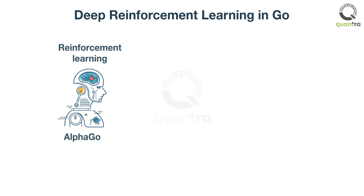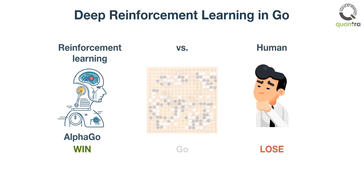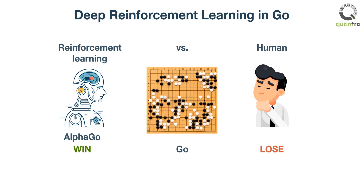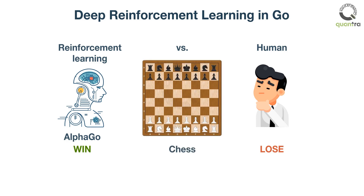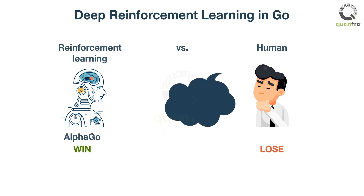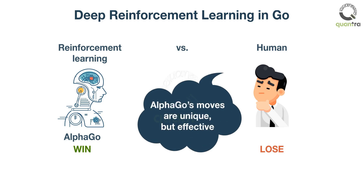AlphaGo, which uses a deep reinforcement learning approach, became the first AI to defeat top-ranked human players at Go. AlphaGo has also been phenomenal in defeating chess players too. What's surprising is that AlphaGo used a combination of moves which were seen as revolutionary to human players. It played the game in a very unique but effective way.